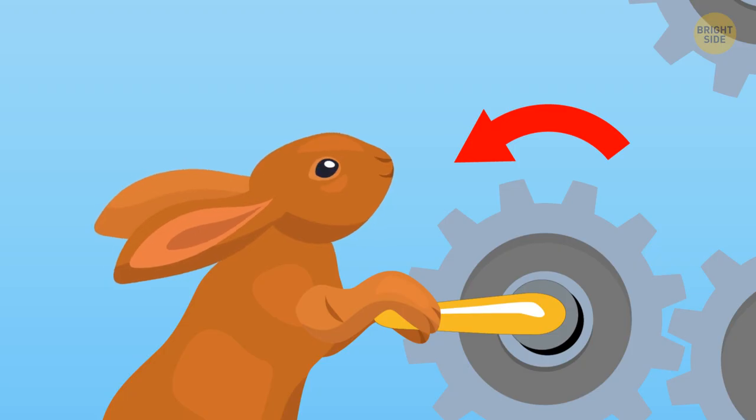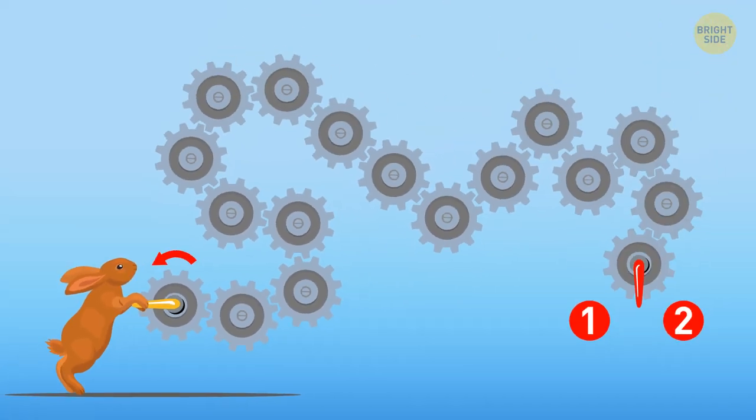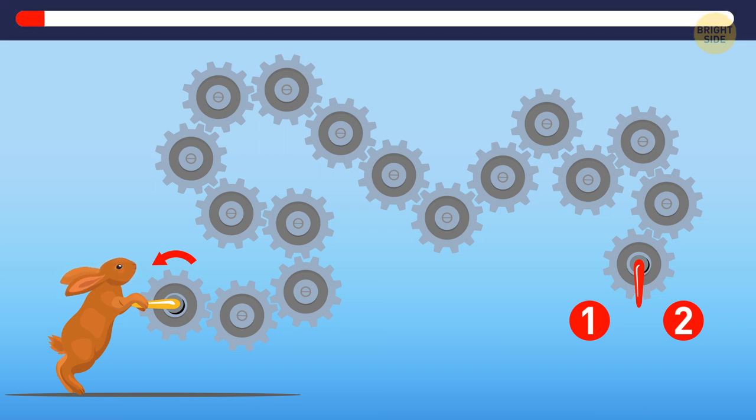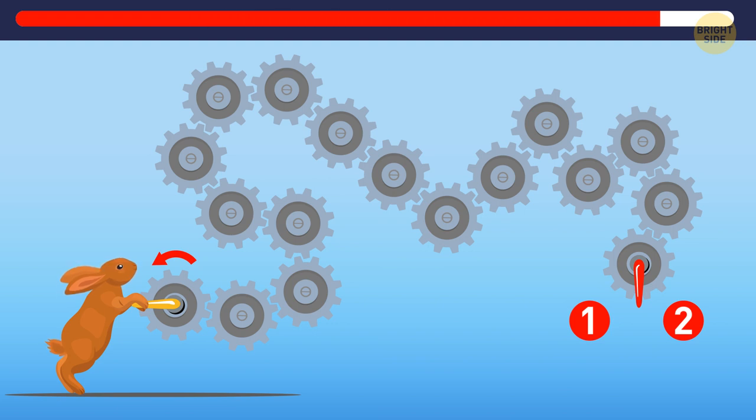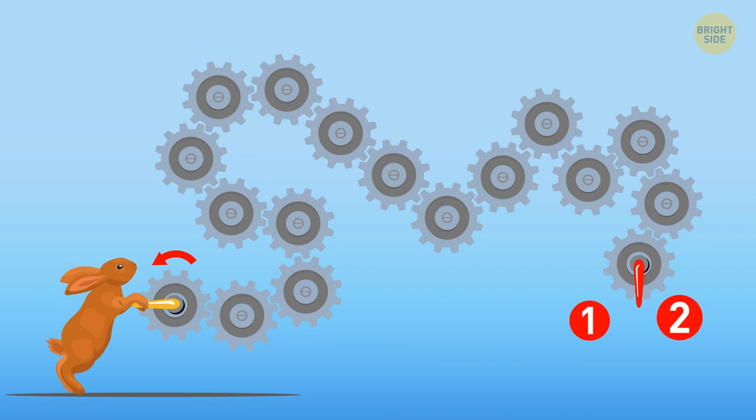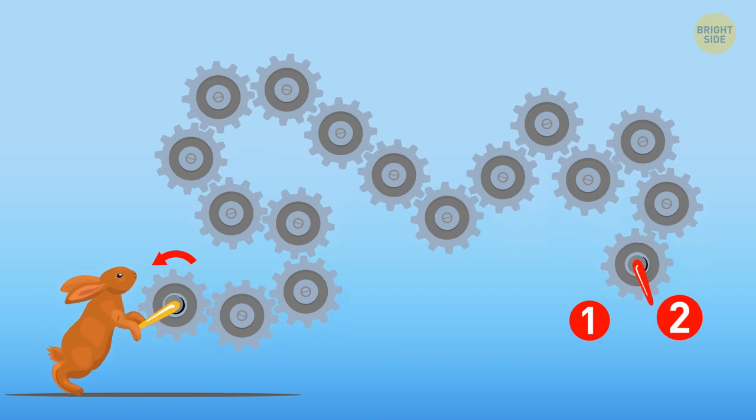Look at this cute little rabbit rotating the gear. Can you predict which mark the arrow will point at? Number one or number two? Number two. The gears in direct contact will always rotate in opposite directions.